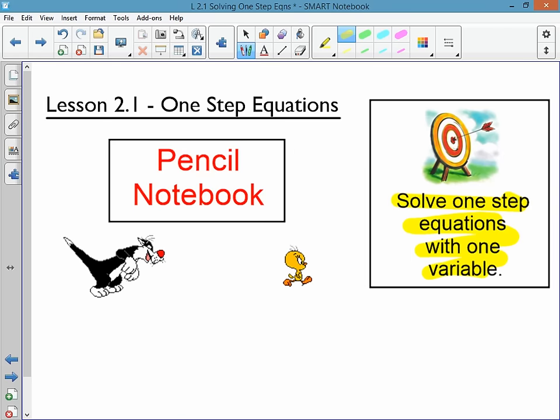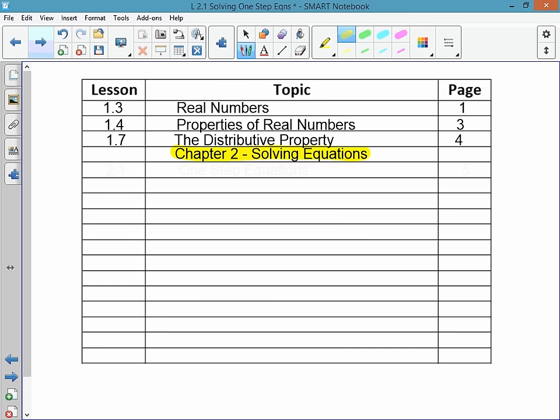The lesson target is to solve one-step equations with one variable. Each chapter you're going to want to separate by showing that you're starting a new chapter. So write in chapter 2, solving equations, and then you're going to add the first lesson, 2.1, one-step equations.